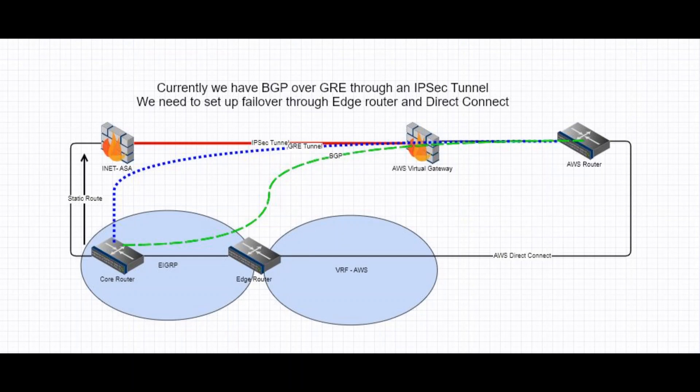We are going to assume the physical circuit connectivity has been completed, because that is frankly not in your hands. In most cases, the connectivity termination will be done by the data center team and the AWS circuit providers. Let's assume the edge router is able to ping the AWS router and vice versa, and let's start from there.